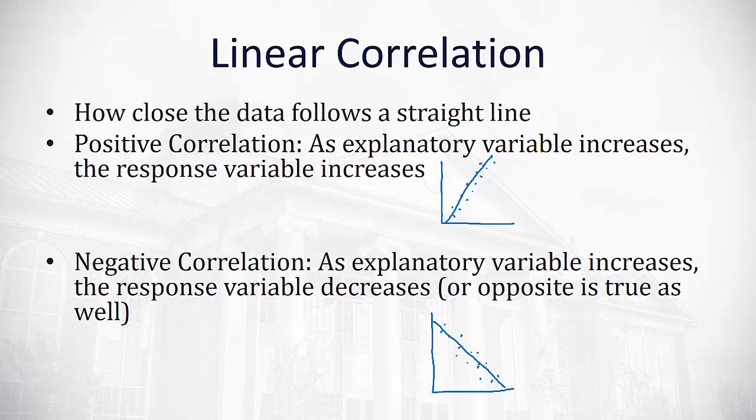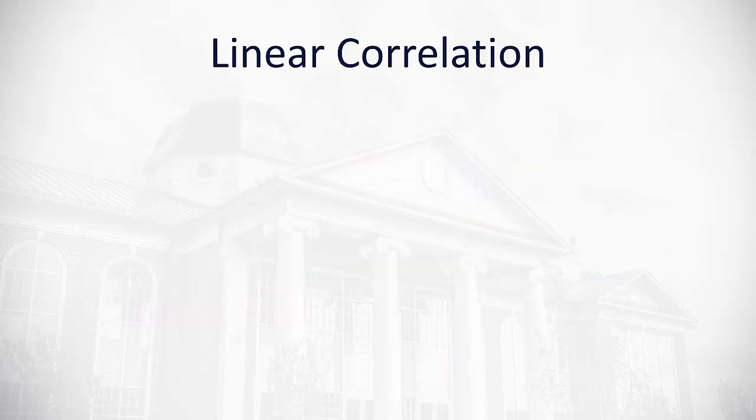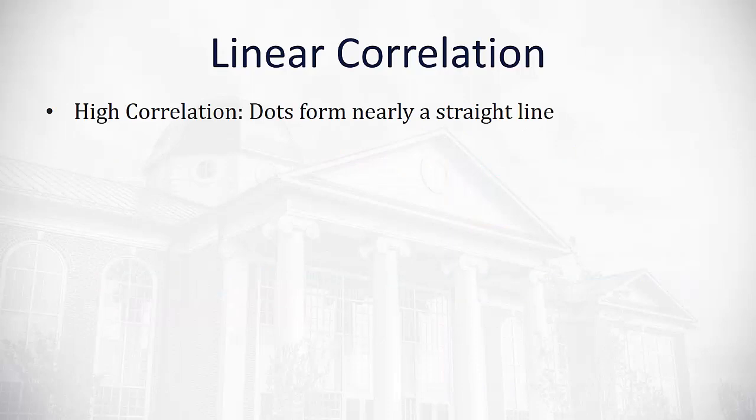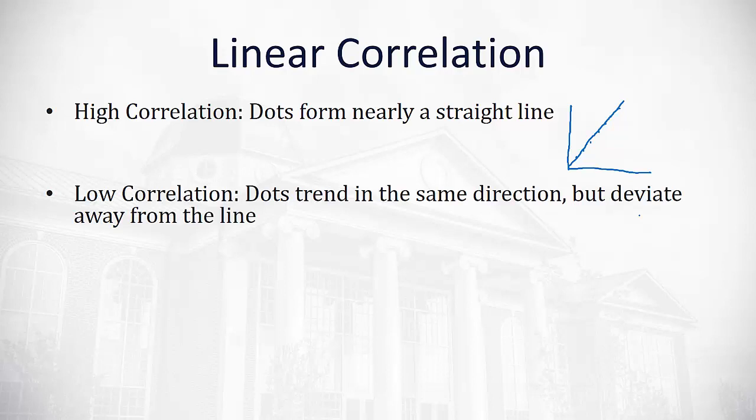Not just direction, though. Correlation also measures strength. So, we'll say we have a high correlation whenever the dots follow basically a straight line. If the dots look like a really good straight line, that's going to be a high correlation. Whether positive or negative, straight line means high correlation.